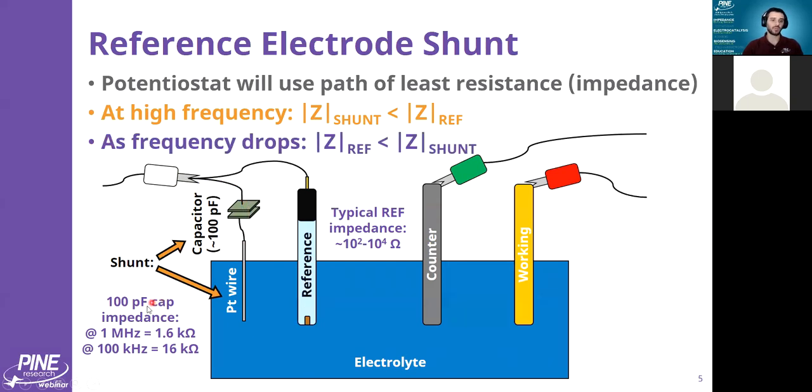As the frequency drops to 100 kilohertz in this particular example, now my impedance at the capacitor and shunt side is 16 kiloohms, it's 5 here. The potentiostat will revert to measuring the reference electrode as normal.